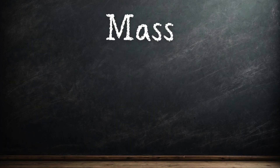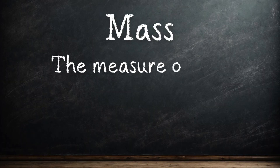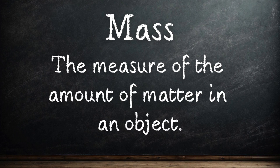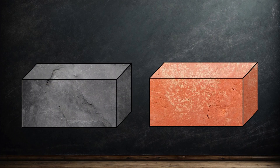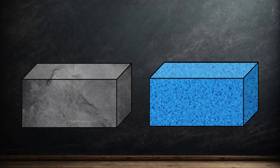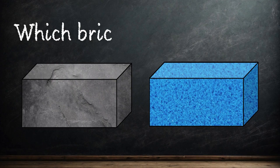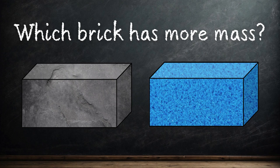Let's start with mass. Mass is the measure of the amount of matter in an object. Imagine two bricks that are the same size. One of the bricks is made out of rock and the other brick is made out of foam. Which brick has more mass? If you picked them both up, which would you expect to be heavier? That's right, the brick that's made of rock.